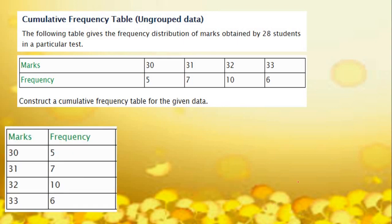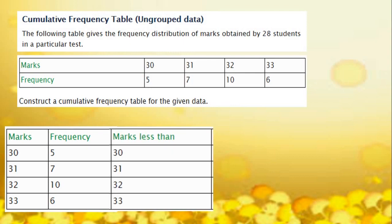Here is the mark and frequency we wrote. Now, to write the cumulative frequency table, we have to rearrange this class interval. So we rearrange the marks into: marks less than 30, less than 31, less than 32 and less than 33.